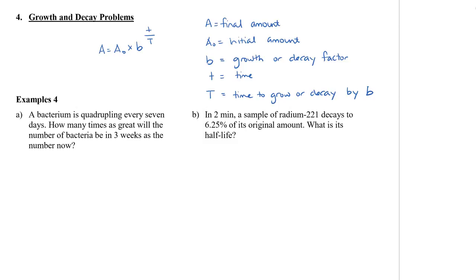Let's take a look at this first example. A bacterium is quadrupling every seven days. How many times as great will the number of bacteria be in three weeks as the number now? Our numbers are three weeks and also seven days. Notice the difference in time measurements. We have A equals A naught, and we have the quadrupling, so we know it's times four, and it's quadrupling every seven days.